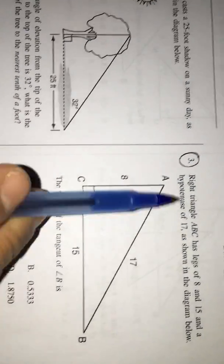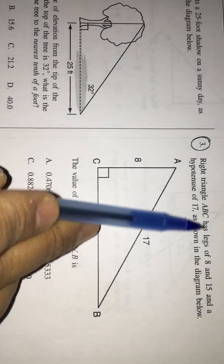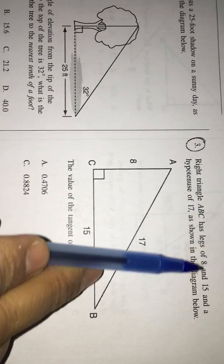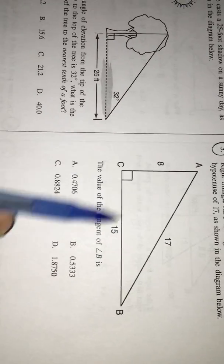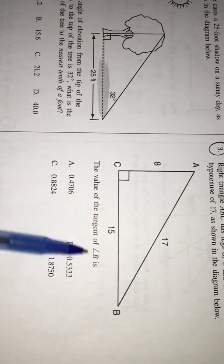So first, the third one. What is it saying? Right triangle ABC has legs of 8 and 15 and a hypotenuse of 17 as shown in the diagram: 8, 15, 17. The value of the tangent of angle B.